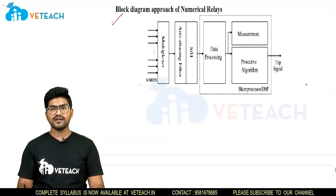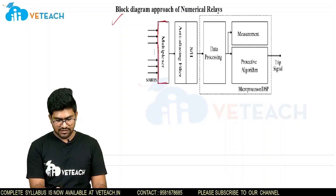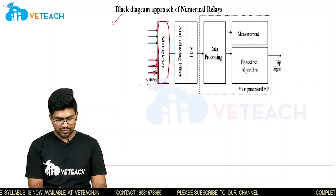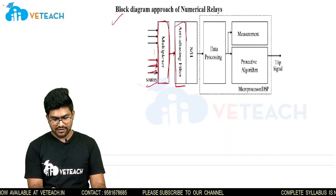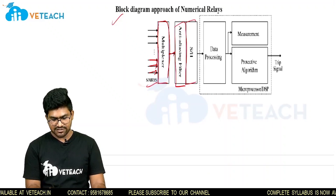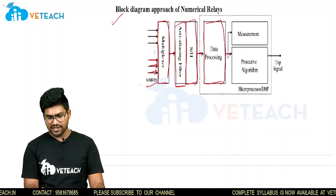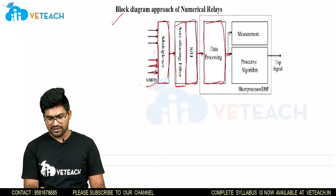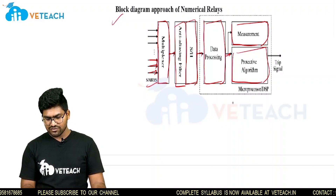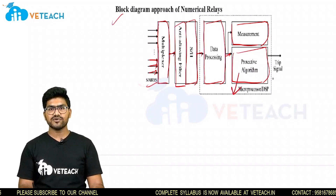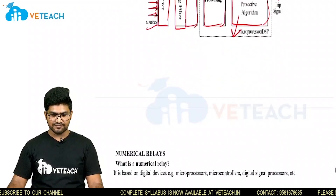Coming to the block diagram approach of numerical relays. From here we have taken a multiplexer, to which inputs from sources are given. The output of the multiplexer is connected to an anti-aliasing filter, then to a sample and hold circuit, and this is connected to a data processing unit. The output of the data processing unit is connected to the measuring element — the measurement and protective algorithm. This protective algorithm is essentially the microprocessor. The output of this protective algorithm is given to the trip signal.